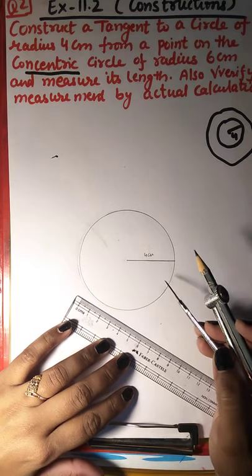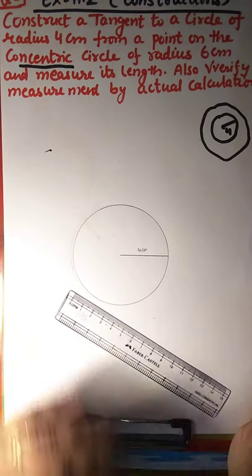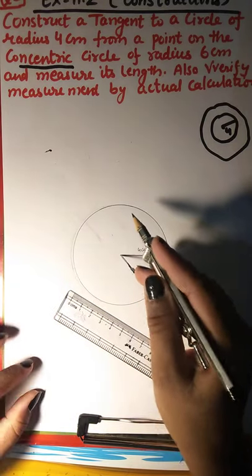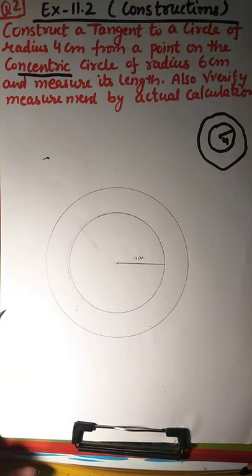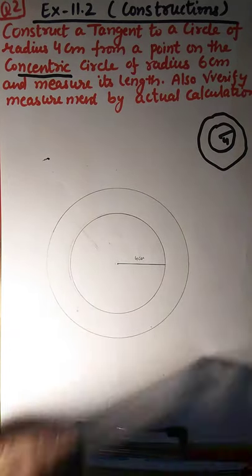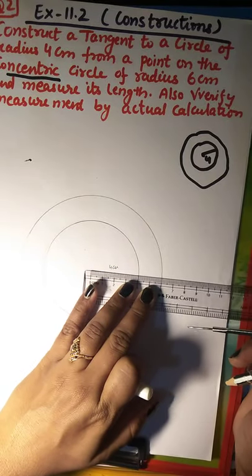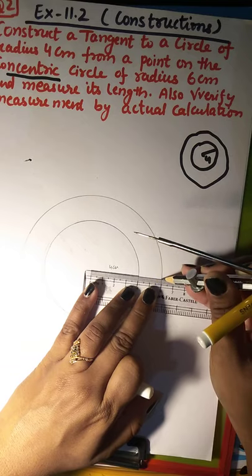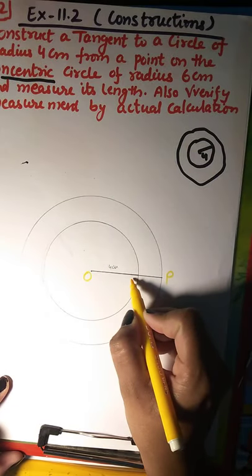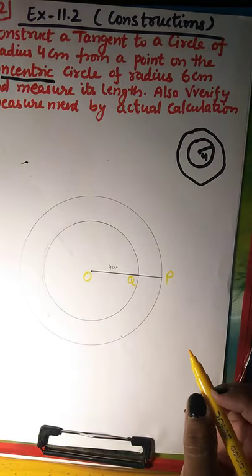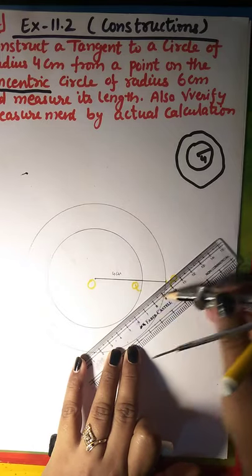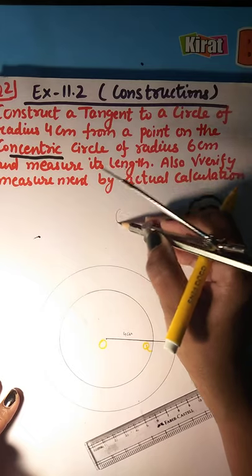Students, you can see I have drawn a circle with radius 4 cm. Now I am going to draw a circle of radius 6 cm. Now you have to draw a circle of radius 6 cm. So this is 6 cm.